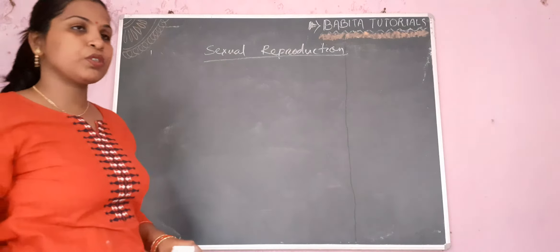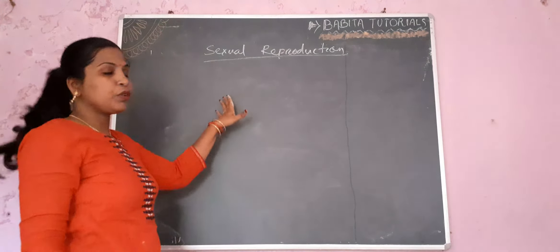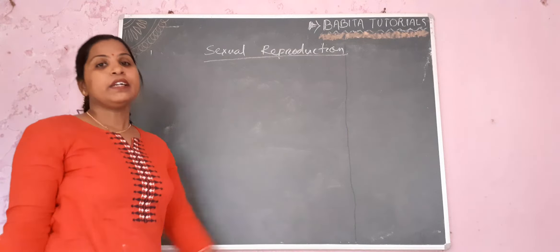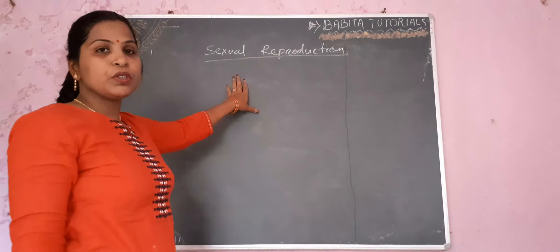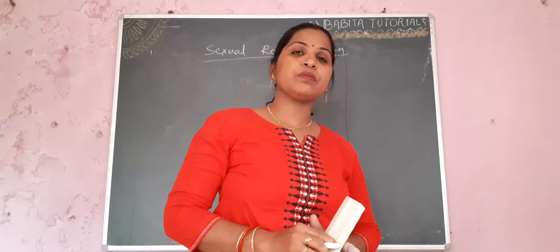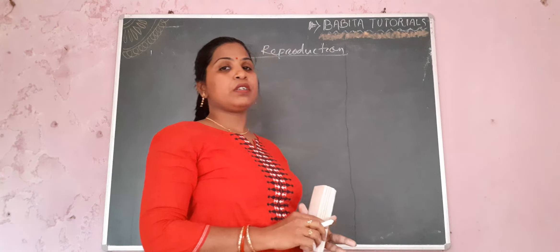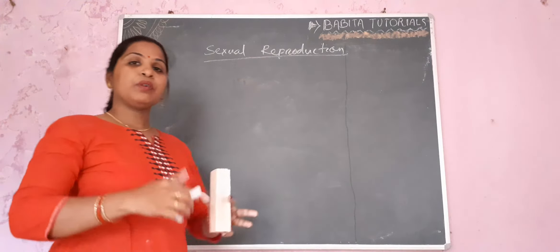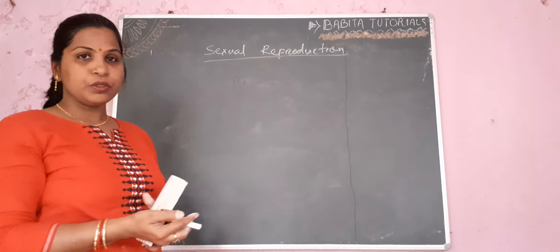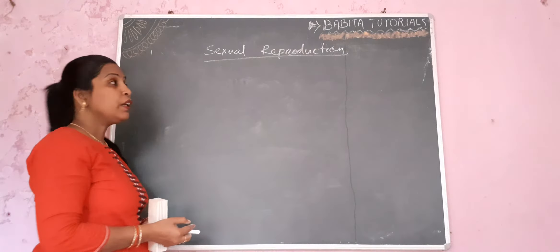We will be reading about sexual reproduction in detail in the next chapter. In this chapter you will get the terms required for the next chapter. Sexual reproduction is the process where two organisms give rise to gametes. The gametes are fused and form the zygote. The zygote will develop into the embryo.